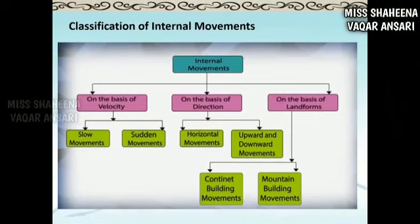Internal movement is classified into three categories: on the basis of velocity, on the basis of direction, and on the basis of landforms. On the basis of velocity — that is, the speed of energy waves traveling — if the speed is very fast, the waves will reach the earth's surface faster and their effect on the earth will be very disastrous.